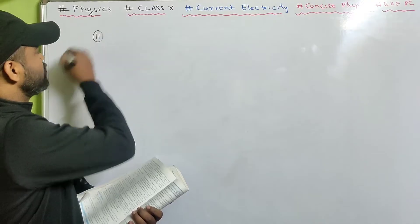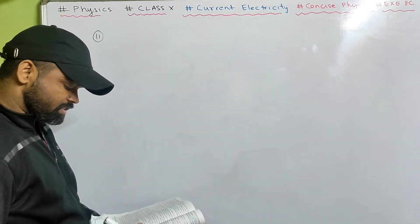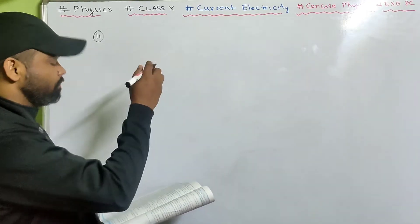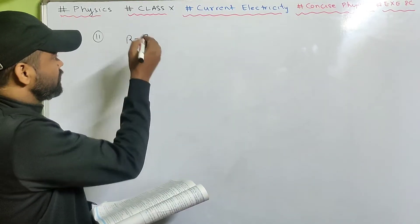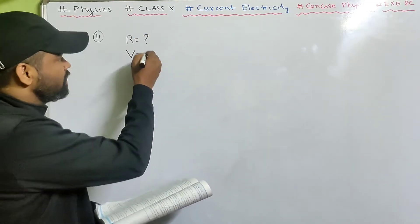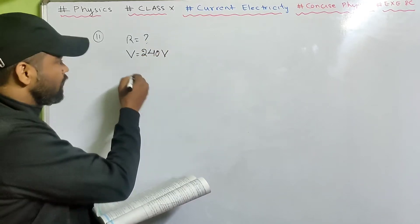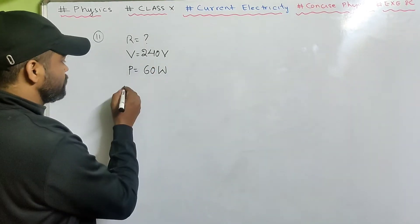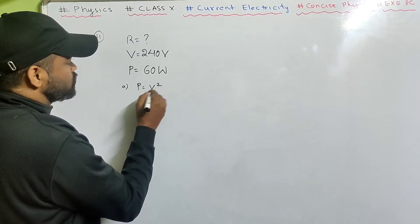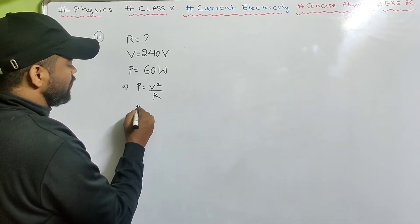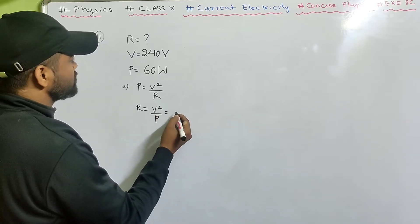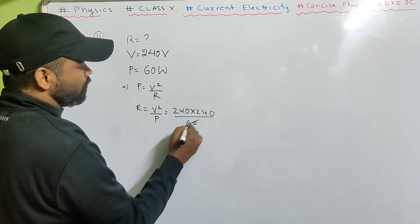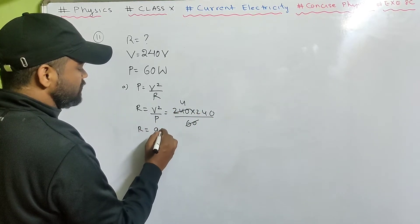Sum number 11: What is the resistance under normal working condition of an electric lamp rated 240 volt and 60 watt? Potential difference is 240 volt and power is 60 watt. Power equals V squared by R, so R equals V squared by P. That's 240 multiplied by 240, divided by 60 — so R is 960 ohm.